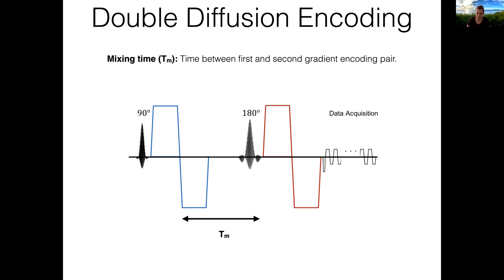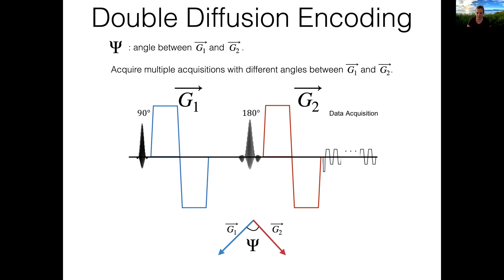Long mixing times, on the other hand, can provide sensitivity to the shapes of compartments. Another key parameter for the sequence is the angle between the first and the second diffusion encoding orientation. By changing the orientation between subsequent diffusion encodings, the effect of the orientation on the diffusion signal can be detected. This can allow for the separation of effects such as orientation dispersion and compartment diffusion anisotropy.